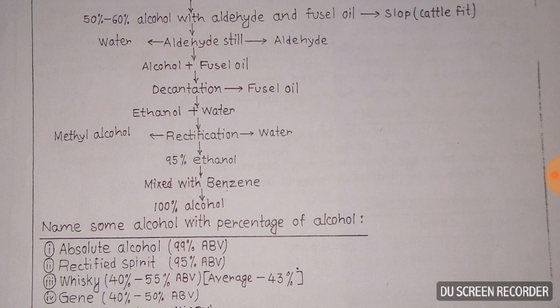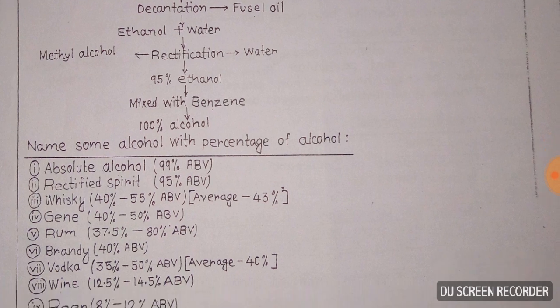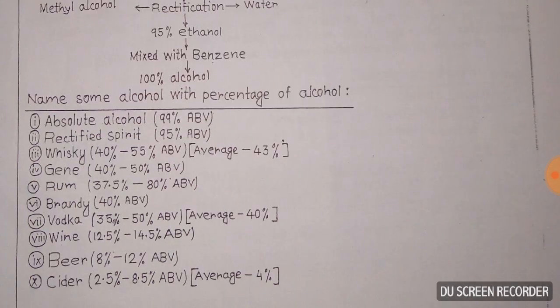With water removed under rectification, 95 percent ethanol is produced. This is then mixed with benzene to produce 100 percent absolute alcohol. Some alcohol types by percentage: absolute alcohol is 99 percent ABV, rectified spirit is 95 percent ABV, and whiskey is 40 to 55 percent ABV, averaging 43 percent.